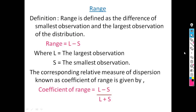In today's lecture, we will see the next measures of dispersion: range and quartile deviation. Range is the simplest measure of dispersion and it is suitable if the extent of variation is small.